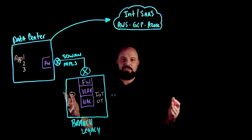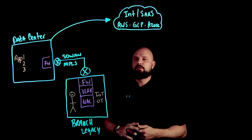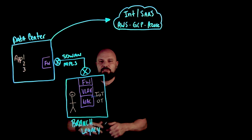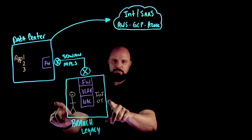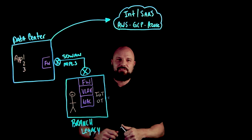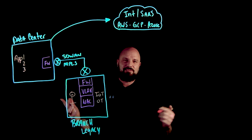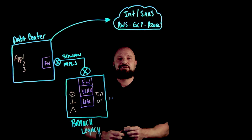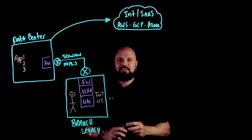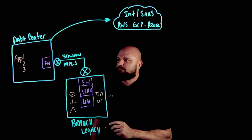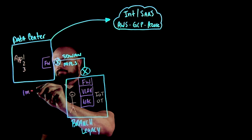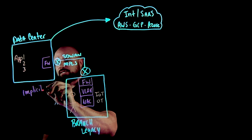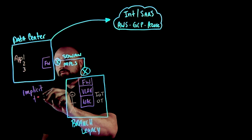Looking at this archaic design, I see four fundamental flaws. The first is related to the business: if the business turns to you and says we need to stand up a new site, it's going to take you months — if not longer — to get that deployed. The business wants stuff done today, not tomorrow. The second fundamental flaw is around implicit trust. You have SD-WAN, you have MPLS, and the idea is these things allow these two networks to talk to each other.